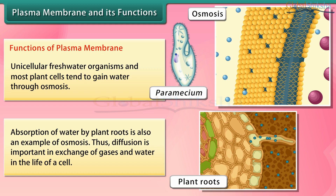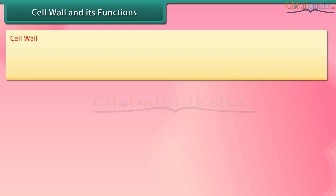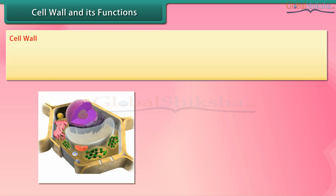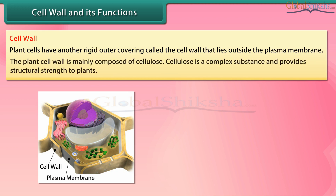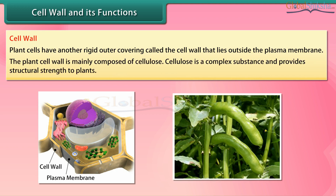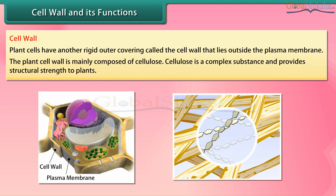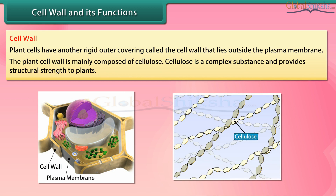The cell membrane also prevents movement of some other materials. Therefore, the cell membrane is called a selectively permeable membrane. Unicellular freshwater organisms and most plant cells tend to gain water through osmosis. Absorption of water by plant roots is also an example of osmosis. Diffusion is important in the exchange of gases and water in the life of a cell.